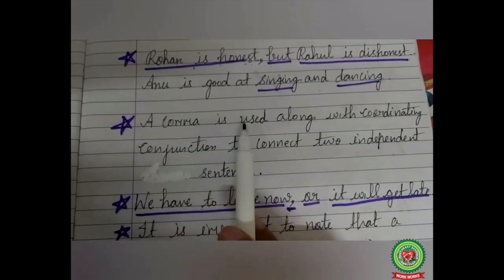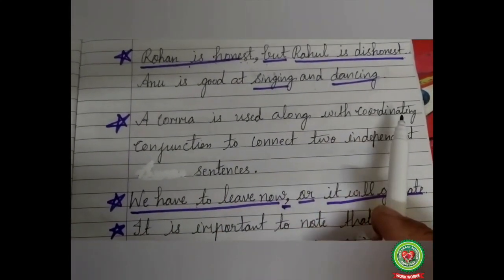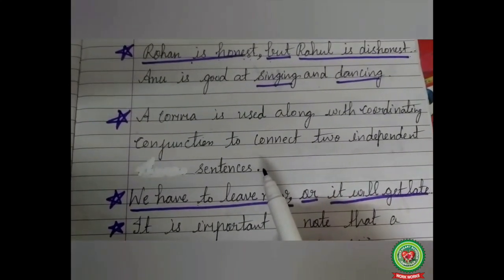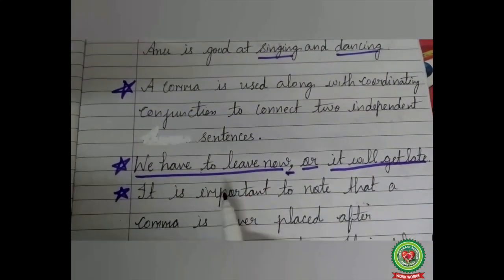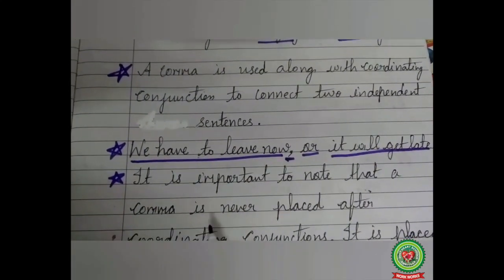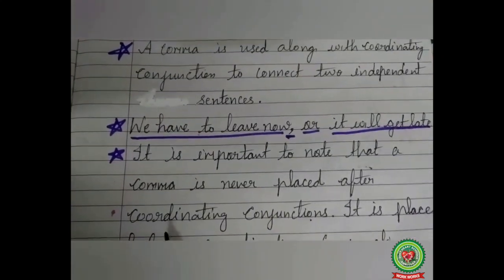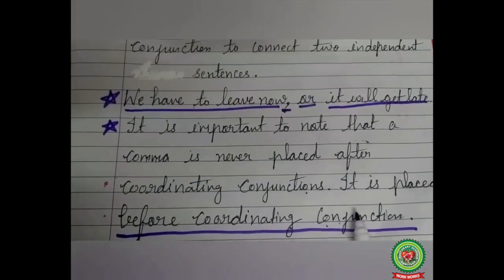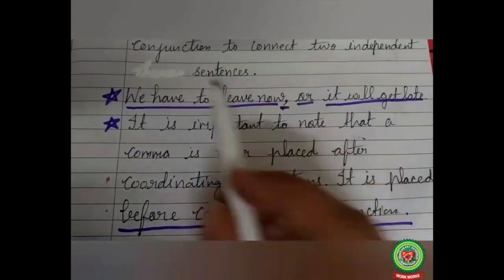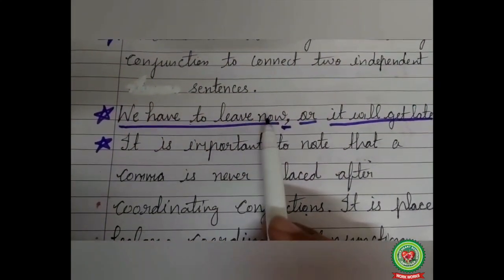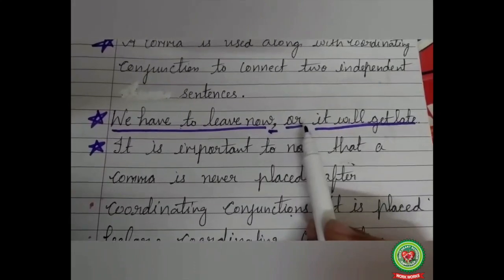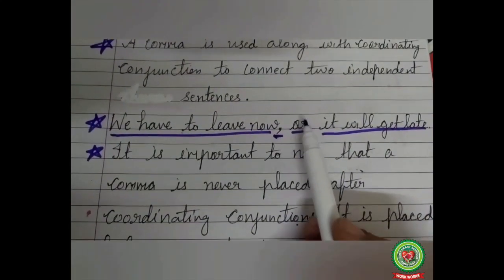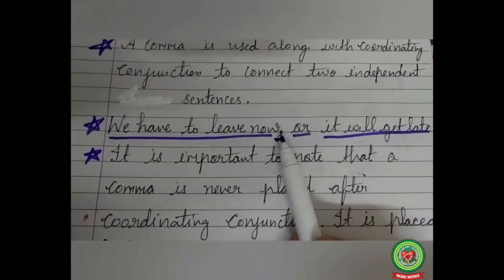Remember some important points: a comma is used along with a coordinating conjunction to connect two independent sentences. It is also very important to note that a comma is never placed after a coordinating conjunction — it is placed before it. For example: 'We have to leave now, or it will get late.' Here we have placed the comma before the coordinating conjunction 'or.'